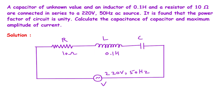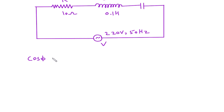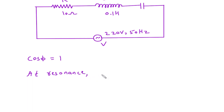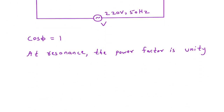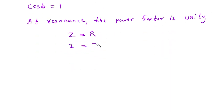The power factor is also given: cos φ = 1. This happens at resonance — when the power factor is unity, the circuit is at resonance. In case of resonance, impedance Z is equal to R, and the maximum current will flow.